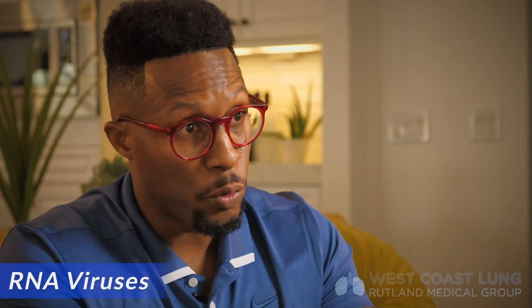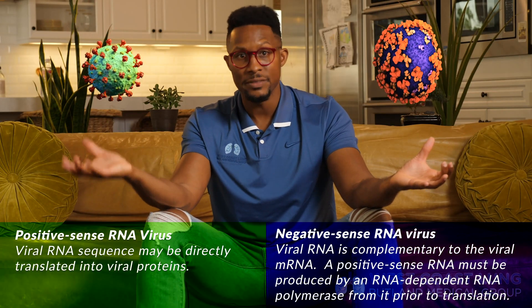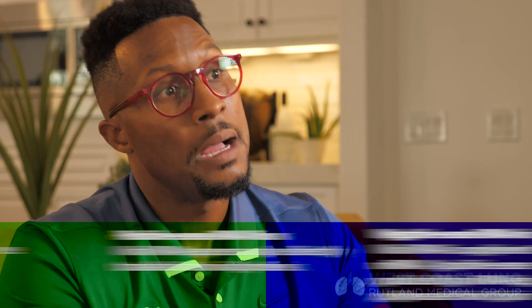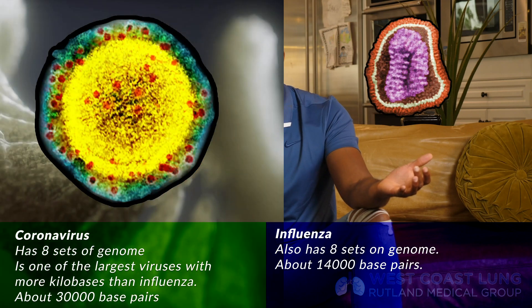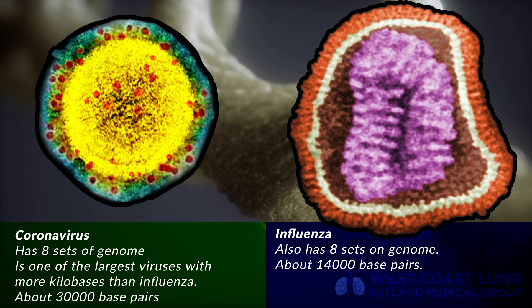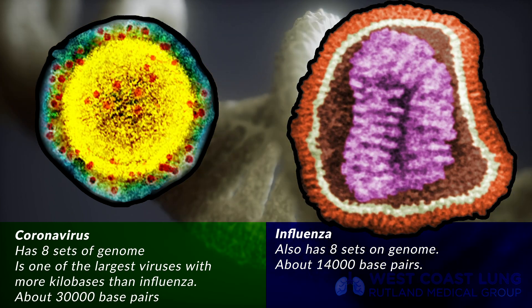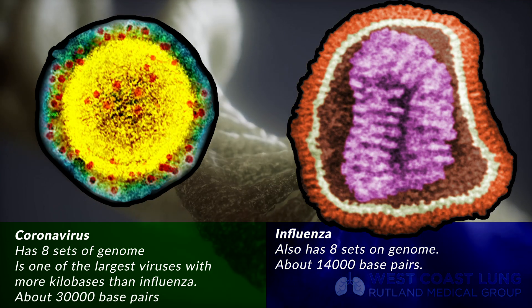When you look at both coronavirus and influenza, they're both RNA viruses. Influenza is a negative-sense RNA virus; coronavirus is a positive-sense RNA virus. They both have eight segments of genome, but coronavirus has a bigger genome — more kilobases than influenza. In fact, coronavirus is one of the largest viruses in terms of the amount of genome within its cell.